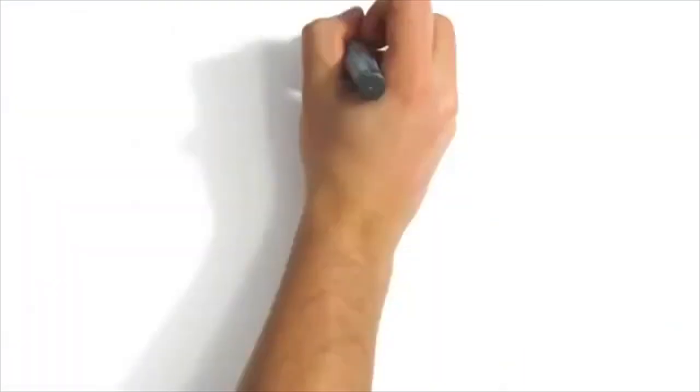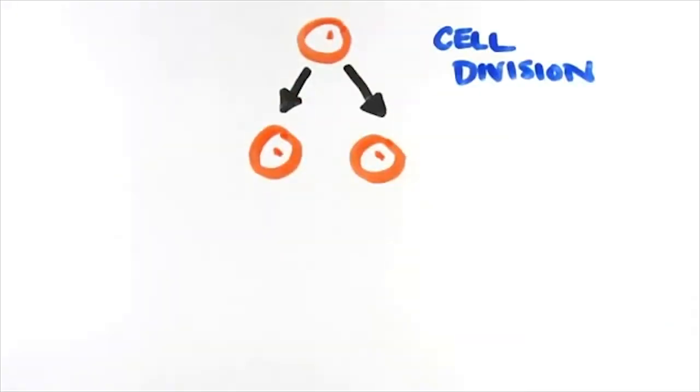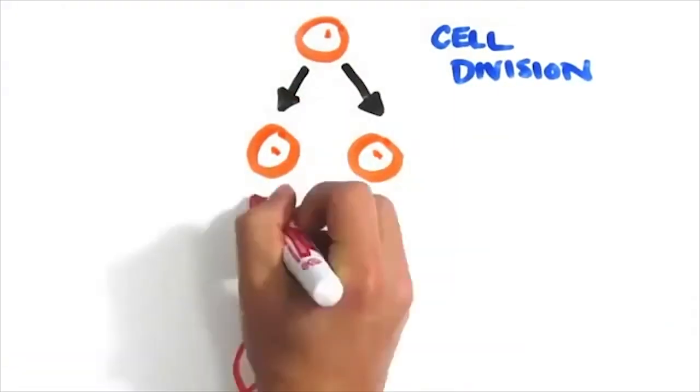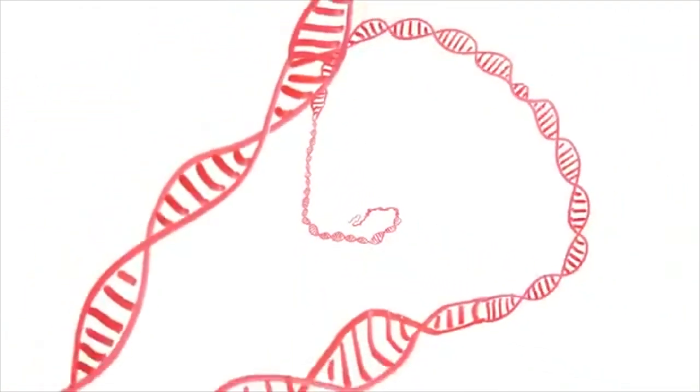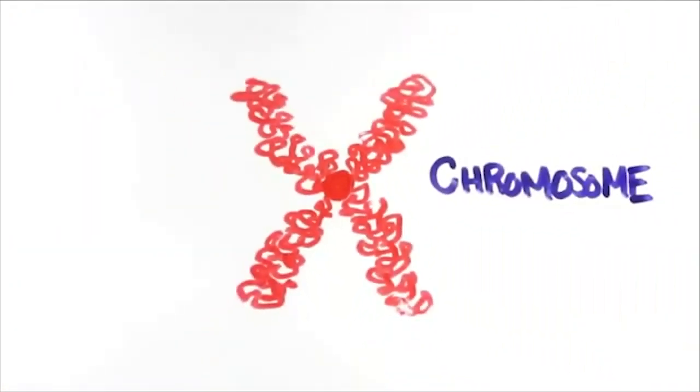Your body is made up of trillions of cells which are constantly going through cell division. And every time they divide, they make a copy of their DNA as well. This DNA is tightly packed into structures called chromosomes of which humans have 23 pairs.